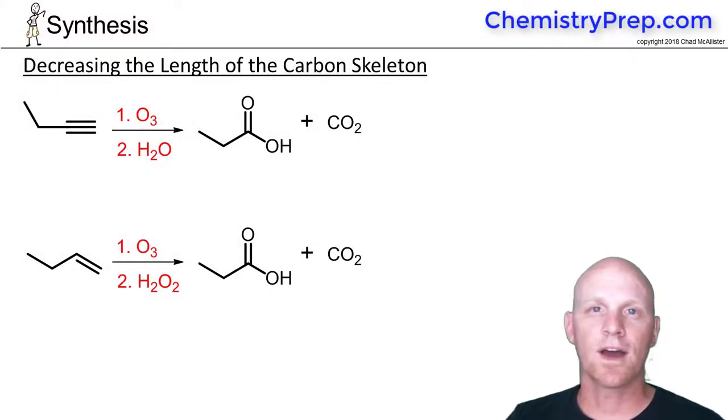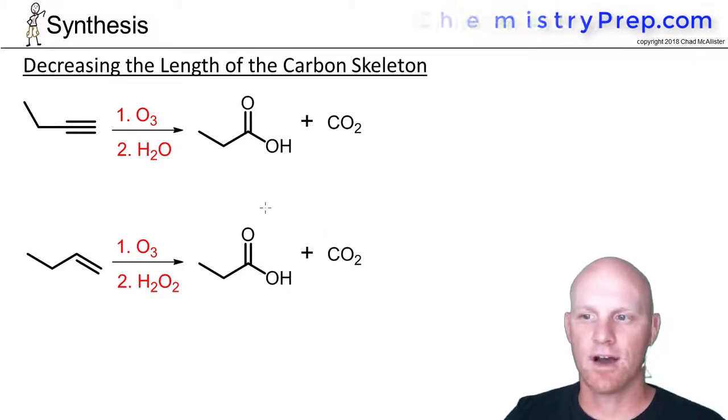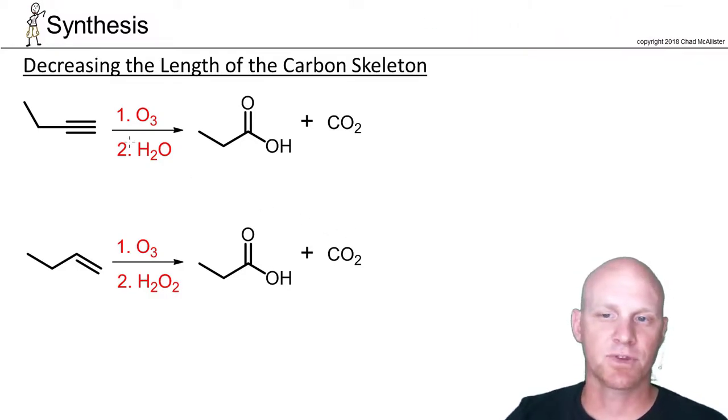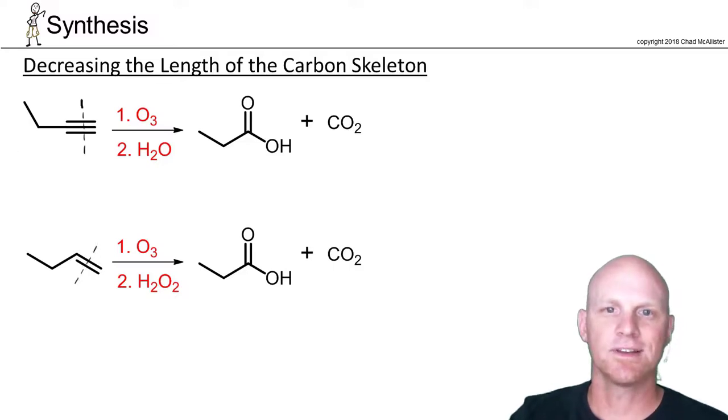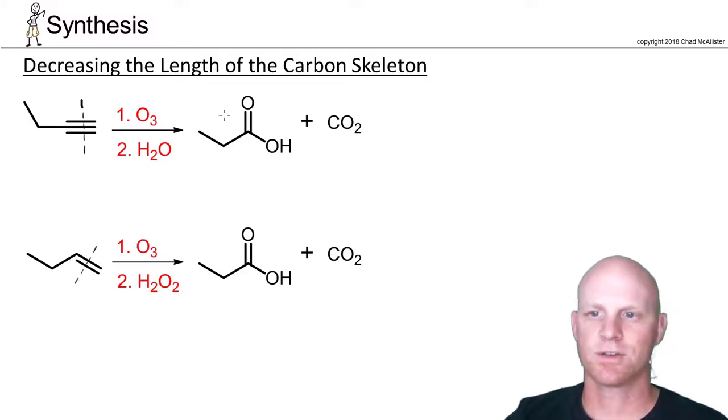Now we'll finally talk about the one way you know to decrease the length of the carbon chain, and that's going to be with oxidative cleavage. Specifically we're going to use ozonolysis. Whether you have a carbon-carbon triple bond or a carbon-carbon double bond, you can cleave it right down the middle with ozone.